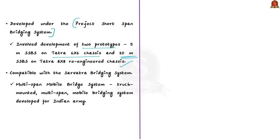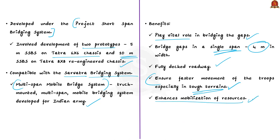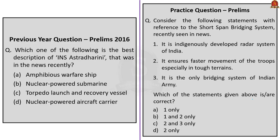These bridging systems are compatible with the Sarvatra bridging system — a truck-mounted multi-span mobile bridging system developed for the Indian Army. The SSBS 10m can bridge gaps up to 10 meters in a single span, has a 4-meter width, and a fully decked roadway, ensuring faster movement of troops in tough terrains and enhanced mobilization of resources. Experts believe these indigenous inductions will boost India's growing defense industrial ecosystem and contribute towards Atmanirbhar Bharat.